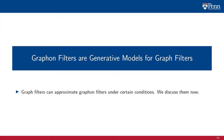We saw that, for convergent graph sequences, graph filters converge asymptotically to graphon filters. That suggests the use of finite graph filters to approximate graphon filters. We now discuss the conditions under which graph filters can approximate graphon filters, and how good that approximation is for different values of n.